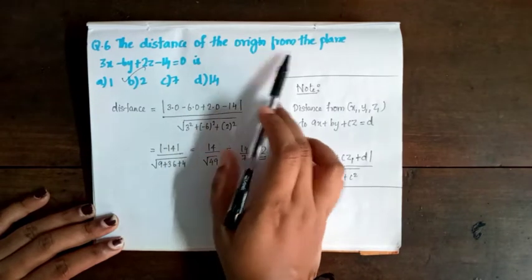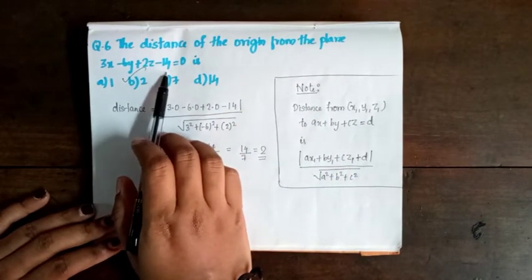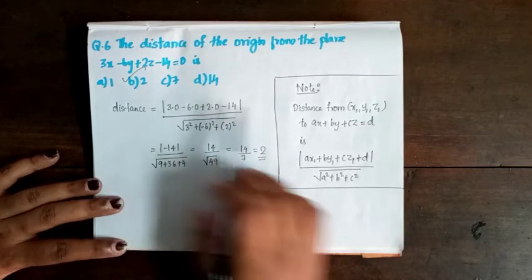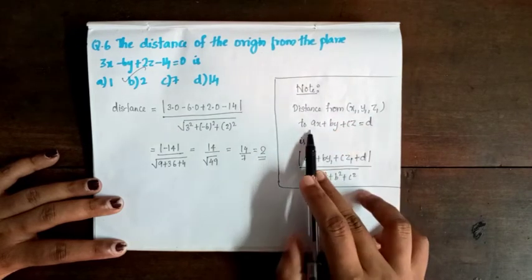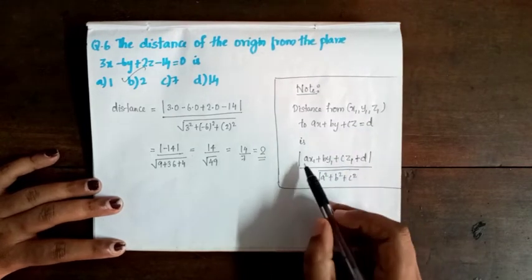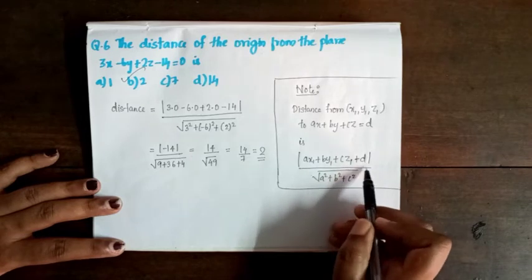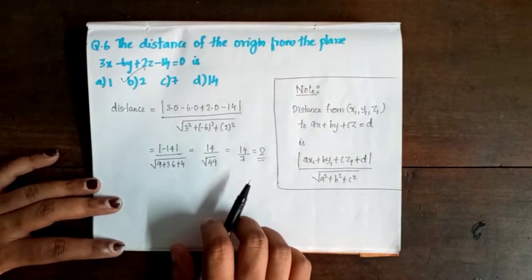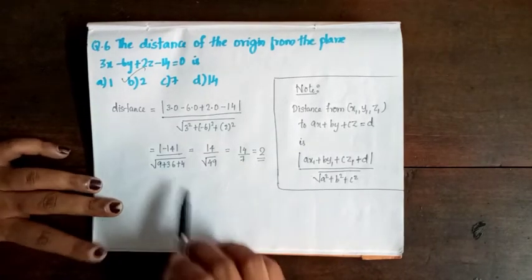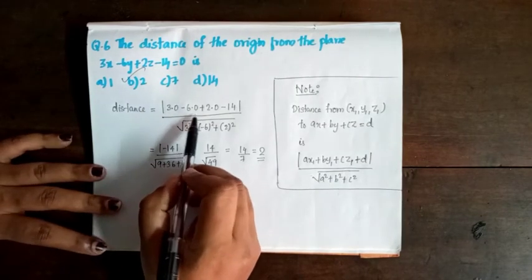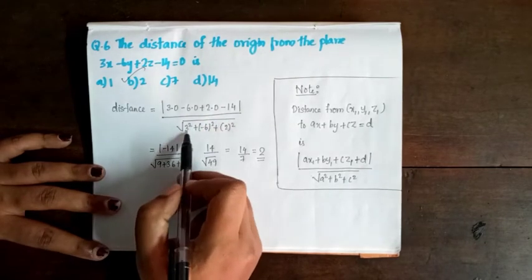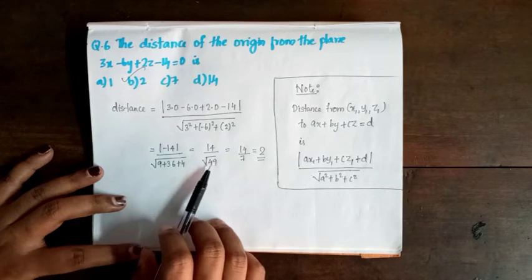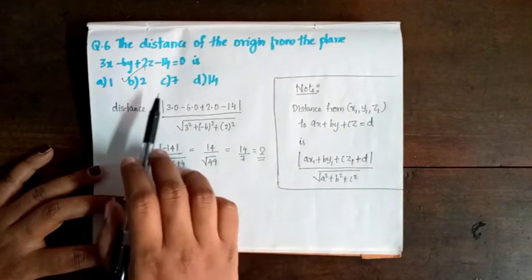Question 6: Find the distance of the origin from the plane 3x minus 6y plus 2z minus 14 equals 0. Using the distance formula: distance equals |ax₁ + by₁ + cz₁ + d| divided by √(a² + b² + c²). Substituting the origin (0,0,0): distance equals |3(0) - 6(0) + 2(0) - 14| divided by √(9 + 36 + 4) equals 14/7 equals 2. Option B is correct.